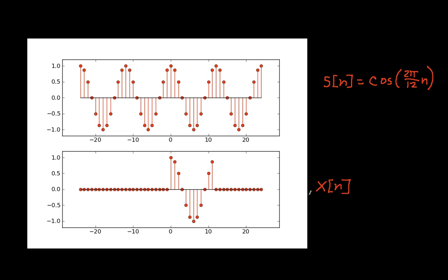So what I've done here is I've taken 12 samples of S of n, and these 12 samples I can think of as a block of 12 samples, and I've called this X of n. The idea that I take just a small chunk — or maybe even a large chunk — but I take a chunk of a signal. This is called windowing, and the origin of the term is that you have a window into part of the signal.